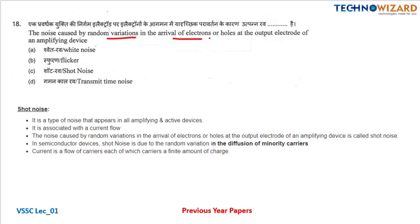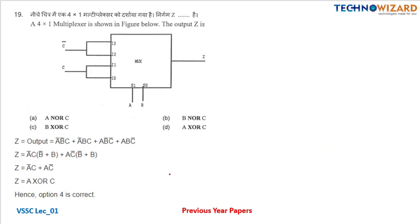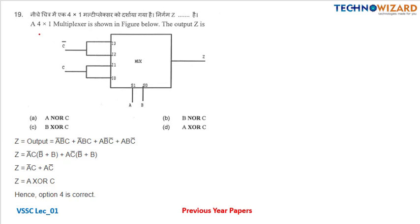Question number eighteen: the noise caused by random variation in the arrival of electrons or holes at the output electrode of an amplifying device is known as shot noise.